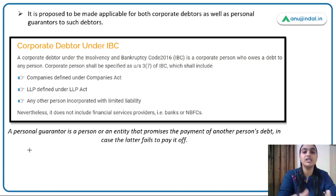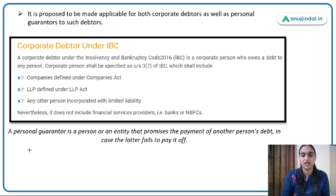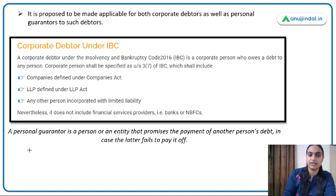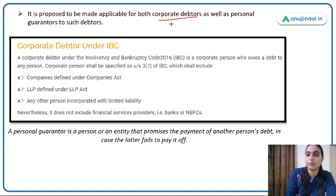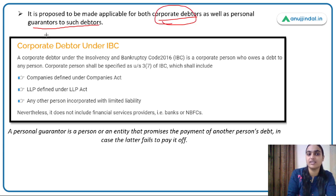Now, the framework suggested by MCA follows similar principles. The MCA framework proposes to make this system applicable to corporate debtors and personal guarantors of such debtors.